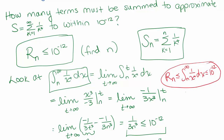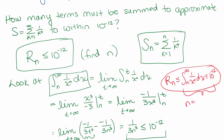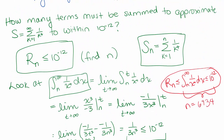And we found that if we let n equal 6,934, then this part of the inequality holds. So the remainder sub 6,934 is going to be less than or equal to 10 to the negative 12th.